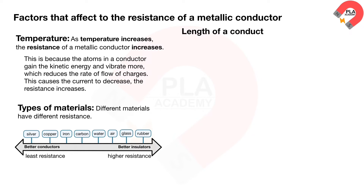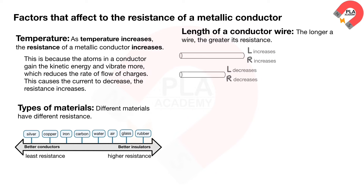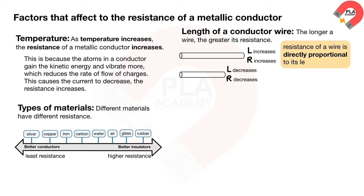Length of a conductor wire: the longer a wire conductor, the greater its resistance. This is because electrons have to collide with more ion atoms, decreasing the rate of flow of charges, and so there will be more resistance. The resistance of a wire is directly proportional to its length.